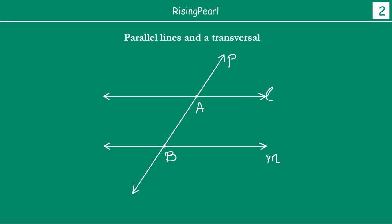Now, what are the different angles that are formed at this point? So these are your four angles at the first intersection. Just as we had in our last presentation, we number them: angle one, angle two, angle three, angle four. Similarly, at the second intersection you have angle five, angle six, angle seven, and angle eight. So this is our transversal P intersecting two parallel lines L and M.